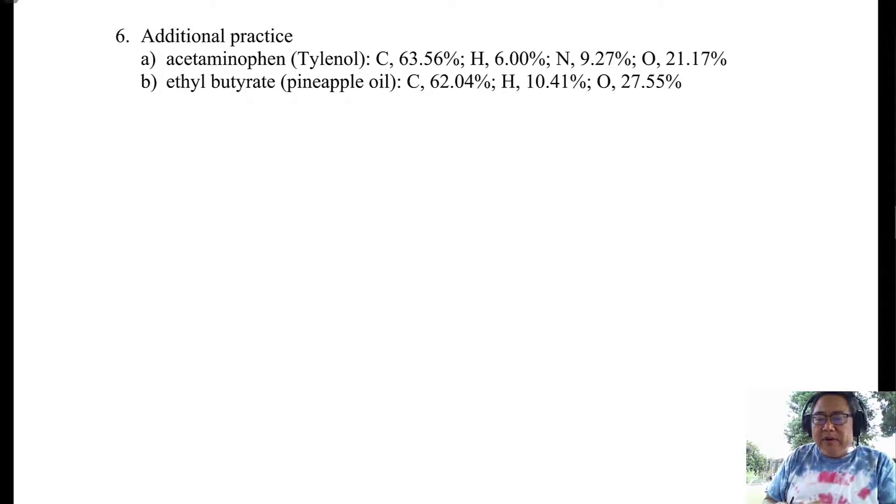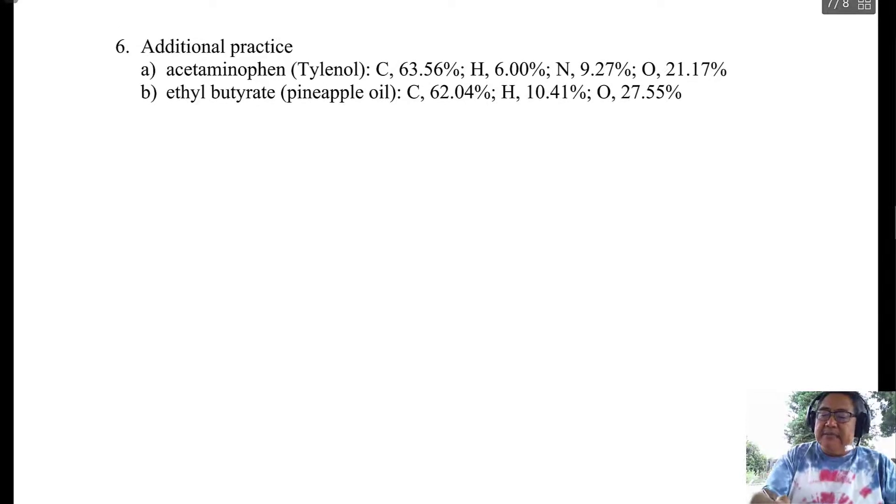So I thought I'd do a couple more problems for you. This is acetaminophen, another analgesic or painkiller, and then ethyl butyrate. I thought I'd start it off without the table so you could see how it goes at the very beginning, from scratch. So we have acetaminophen, and it says this is the mass percent, and what we want to do is calculate its empirical formula.